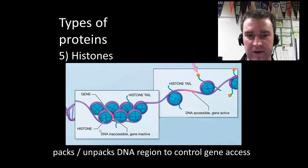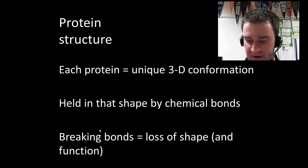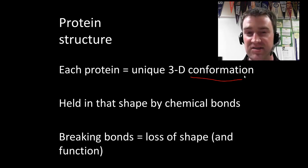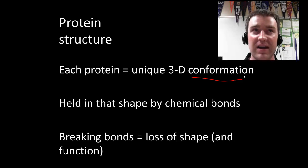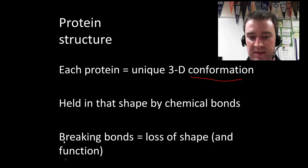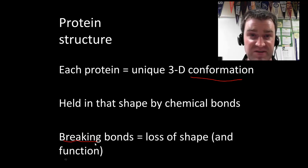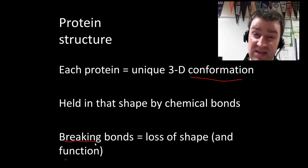All I'm trying to get across is that there are many different protein types, but all of them need a particular shape — a three-dimensional conformation — in order to carry out their job. Proteins obtain a particular shape because many chemical bonds form as the protein is folding up, locking it into that shape. If those bonds break and the protein loses its shape, it loses its function. Your book calls that denaturation, and we're going to investigate what kinds of factors denature proteins.